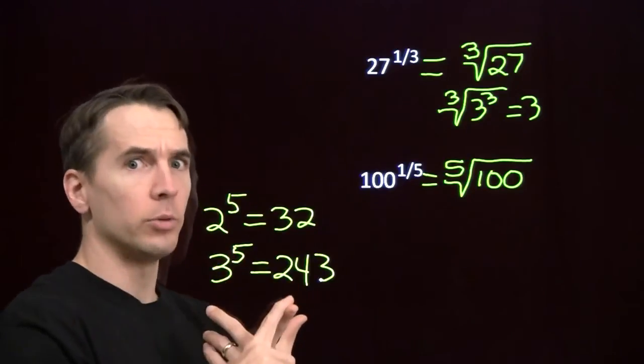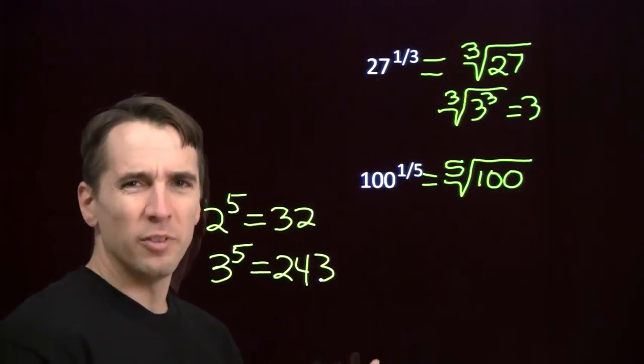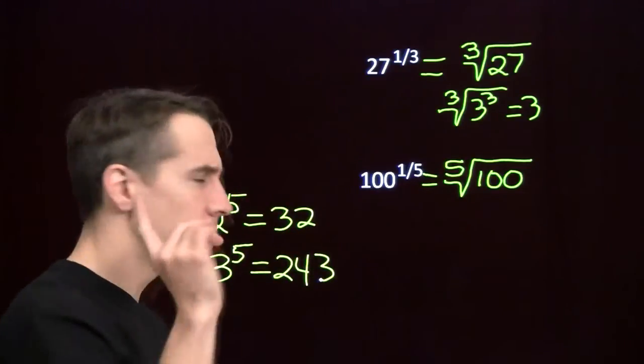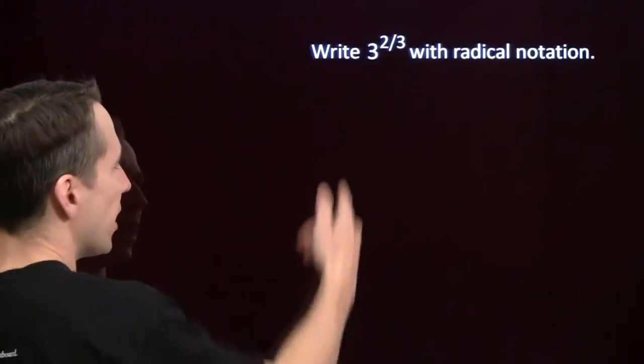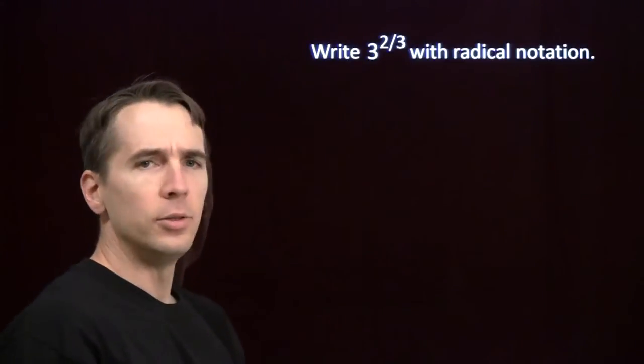Alright, so we've taken care of square roots, numbers raised to the 1 half. Numbers raised to the 1 third, numbers raised to the 1 fifth. It looks like we can take care of something raised to 1 over any integer. What happens if our fraction has something other than 1 in the numerator?